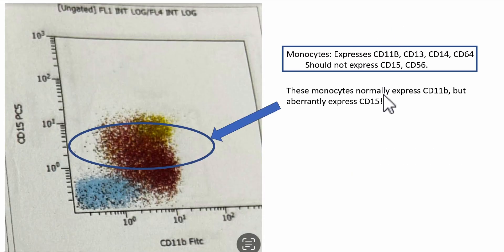Now monocytes should not express CD15, but express CD11B. So here there's CD11B positivity in the monocytes, but there's also some of the monocytes express CD15. So there's aberrant expression by the monocytes of CD15.